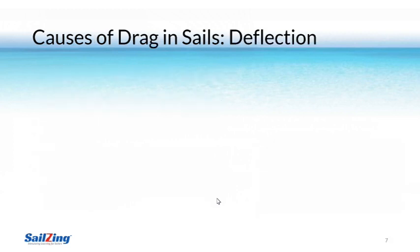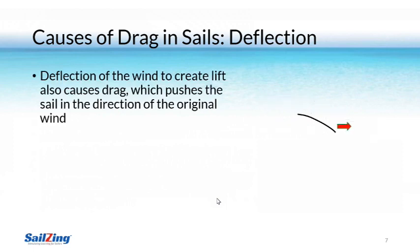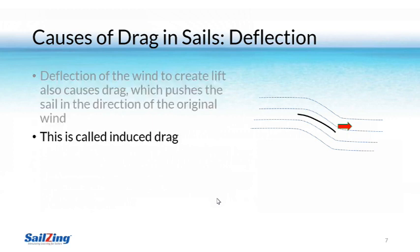Now let's look at drag in more detail. We'll cover two major causes of drag. The first is simply that the sail is deflecting the wind and therefore is pushed back, just like your hand is pushed back when you stick it out the car window. This is called induced drag because it is induced by the deflection.